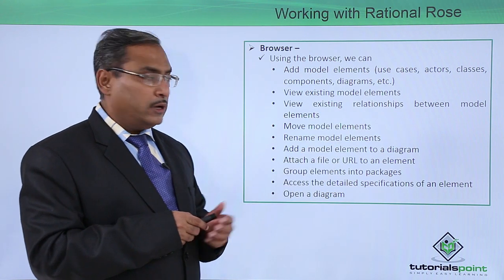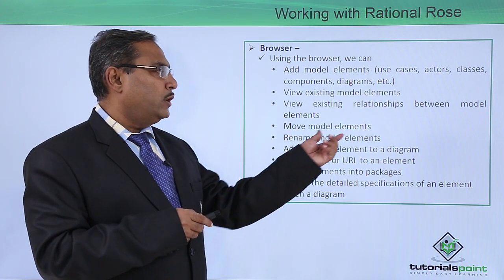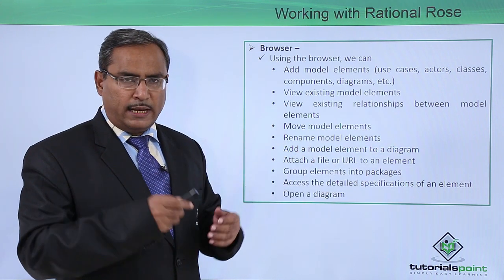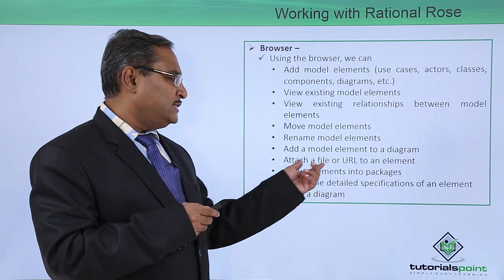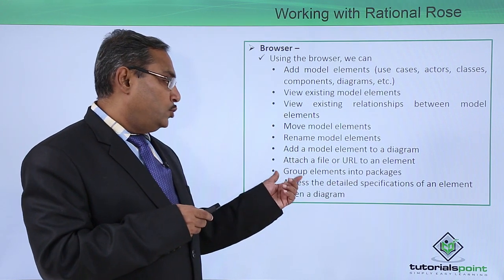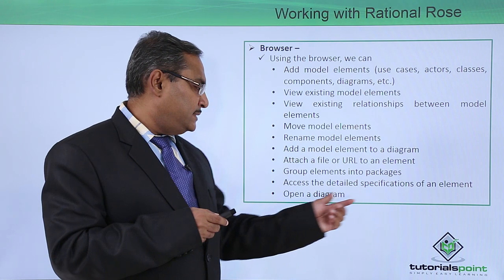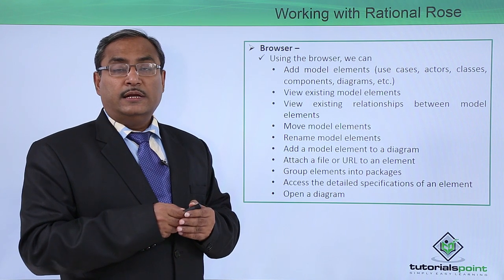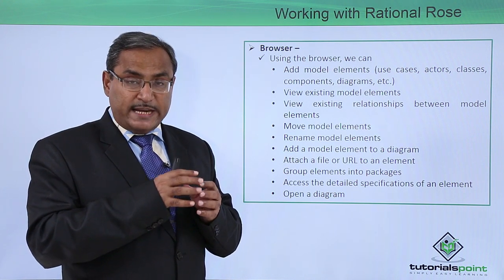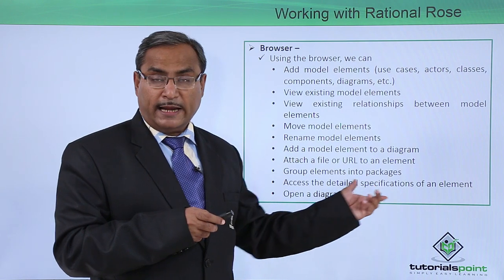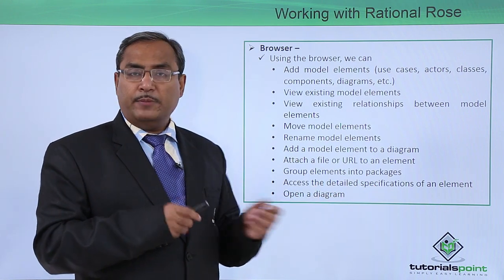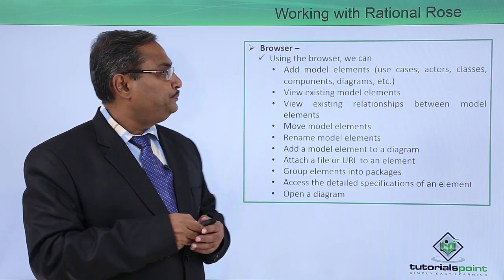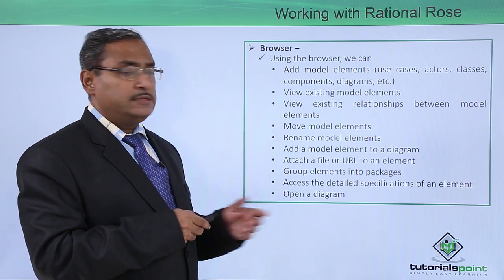You can view existing relationships between model elements, move model elements, rename them, and add a model element to a diagram. You can also attach a file or URL to an element, group elements into packages, and access the detailed specifications of an element. You can also add respective detailing about the specification. You can click on a certain diagram and the diagram will get open in the respective diagram window.